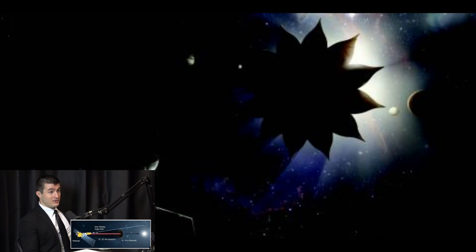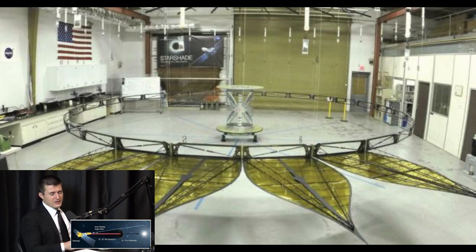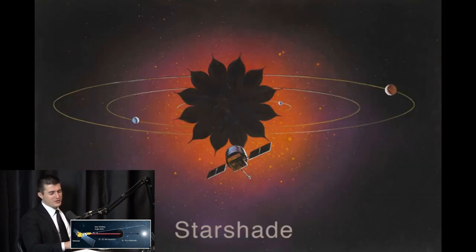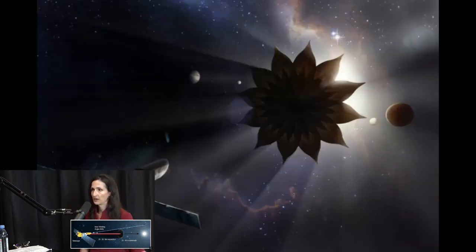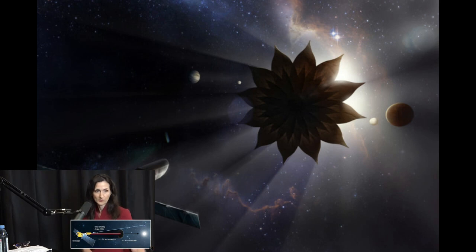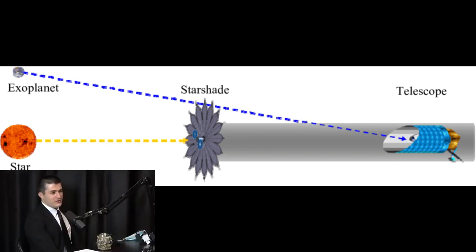In formation meaning the telescope flies - this is an extremely high precision endeavor. We had this analogy like asking a friend to hold up a dime five miles away perfectly, like at the perfect line of sight with you.